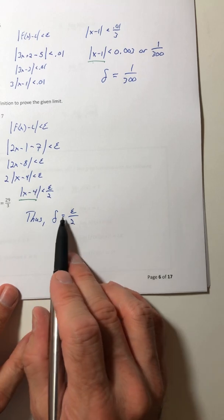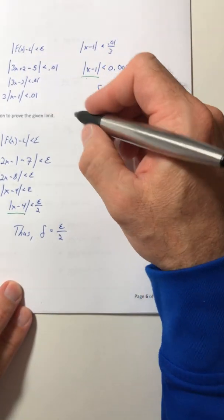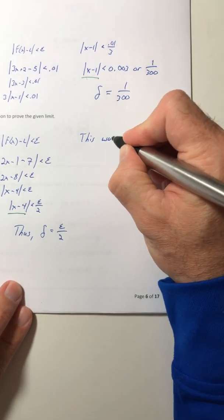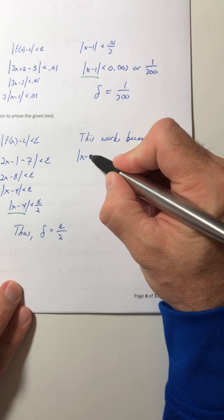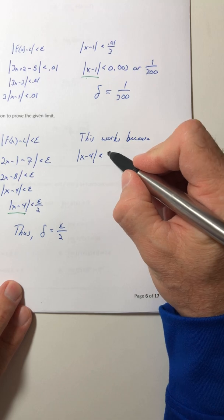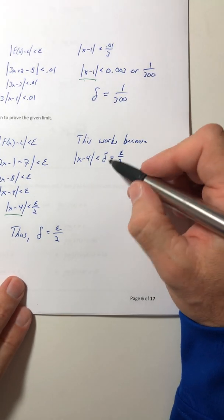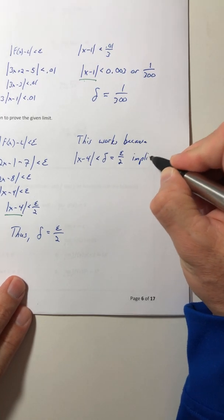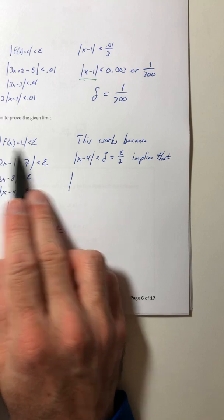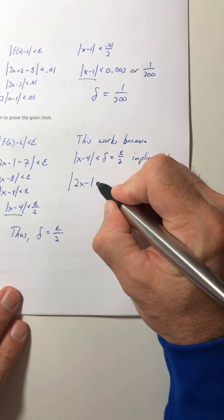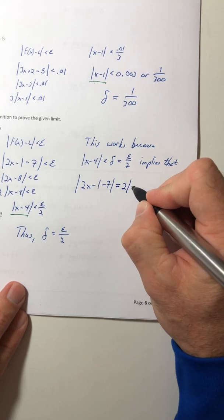So this choice of delta, or what we found delta to equal, this works because if you start using the definition, absolute value of x minus 4 is less than delta. Well, what did we say delta was? I said it was epsilon over 2. So when we have this, that implies that we start working with this and kind of working our way again. The function minus the limit value. So we already played with it. So we know it's going to get down to here. 2 times the absolute value of x minus 4.